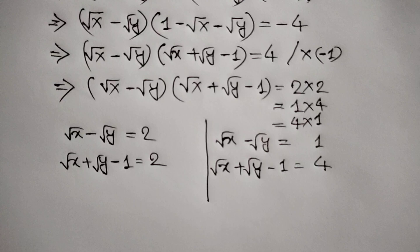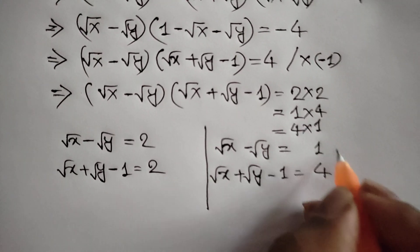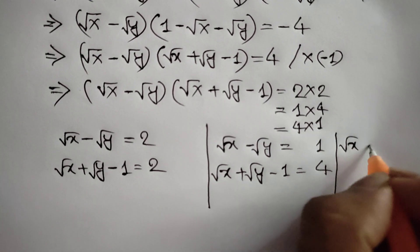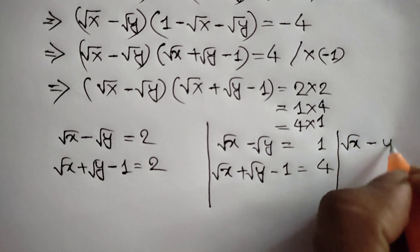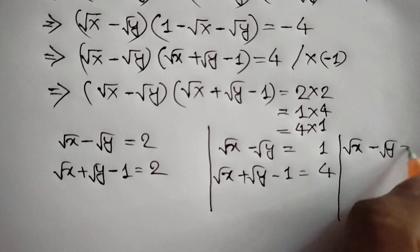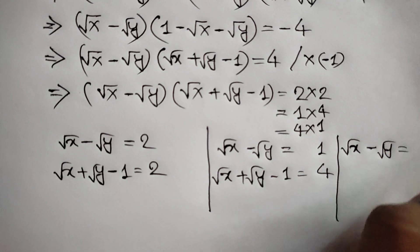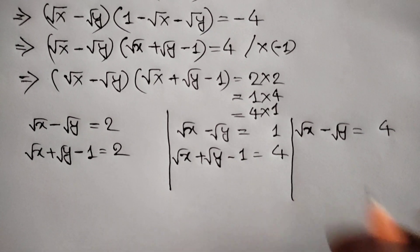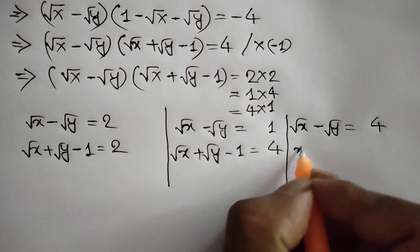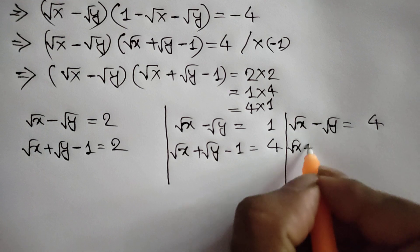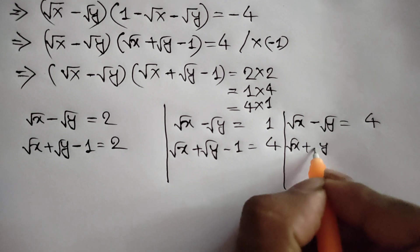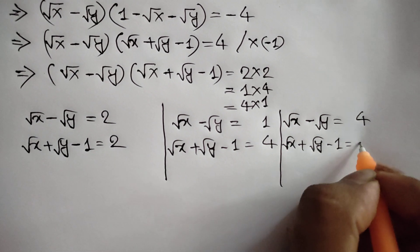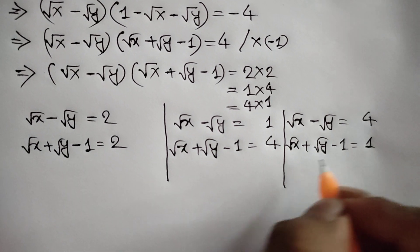And when square root of x minus square root of y is equal to 4, then the value of square root of x plus square root of y minus 1 is equal to 1.